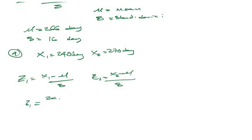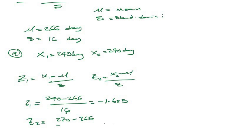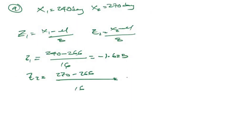Now with all our parameters, z1 equals 240 minus 266, all over 16, which gives minus 1.625. And z2 equals 270 minus 266, all over 16, which equals 0.25. So z1 is minus 1.625 and z2 is 0.25.